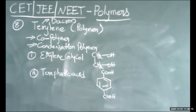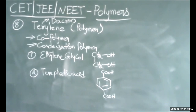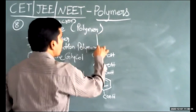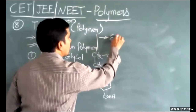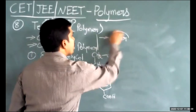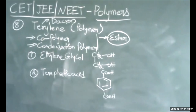The statements about terylene: it is a copolymer containing two different types of monomer units. Whether it is an ester — yes, it is. Terylene is an example of an ester.